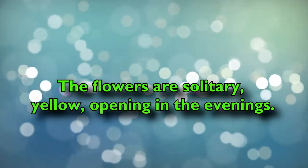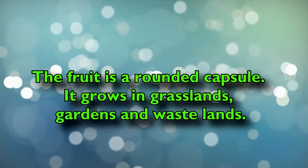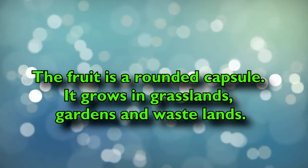The flowers are solitary, yellow, opening in the evenings. The fruit is a rounded capsule. It grows in grasslands, gardens, and wastelands.